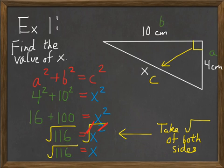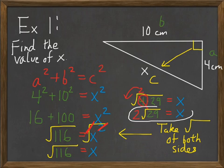But of course, the square root of 116 is not simplified. I could break 116 down into the square root of 4 times 29. Because 4 is the perfect square, I can take the square root of it, which is 2, and bring it out front. Therefore, X is equal to 2 times the square root of 29.